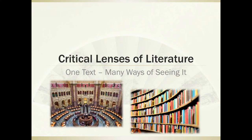Hello, and welcome to our podcast on critical lenses of literature — basically one text, many ways of seeing it. These mental constructs are interesting ways to focus our attention on various parts of a text. When we focus on various parts, different themes or lessons are often revealed by how we focus our attention on this rather than that. It's not a complicated idea, but it may take a little explaining. So let's go and see what we're talking about.